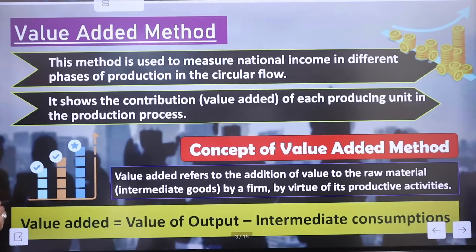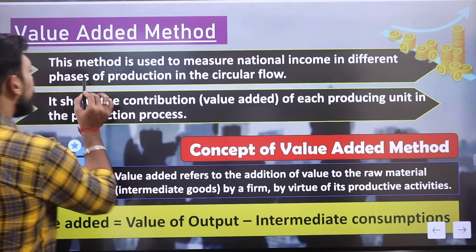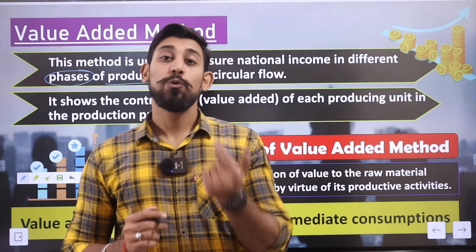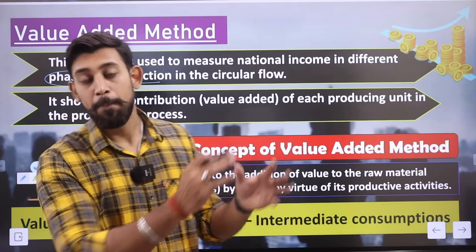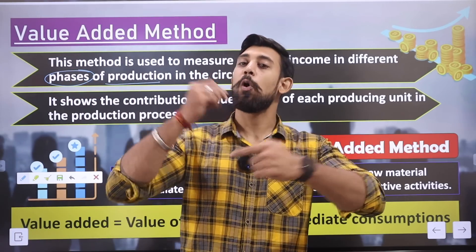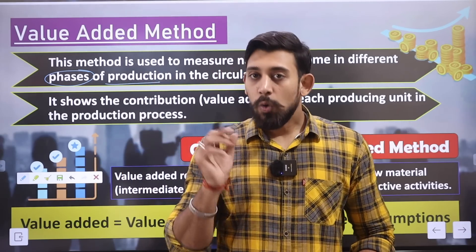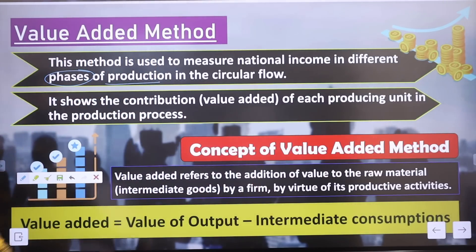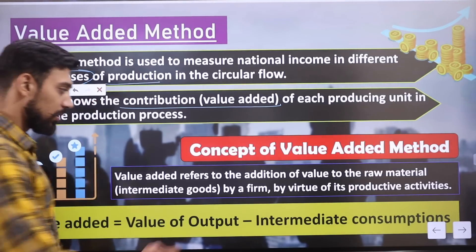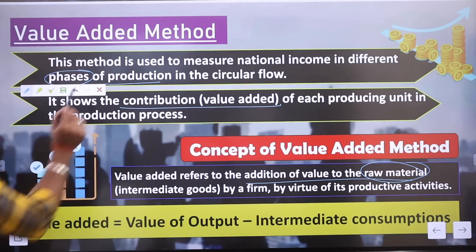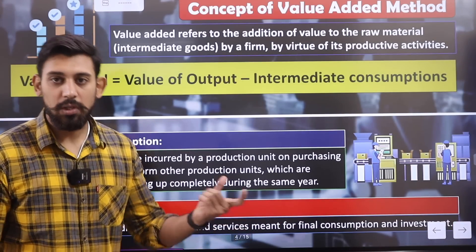The value added method is used to measure national income in different phases of production. For example, a farmer produces wheat, then a miller makes flour, then a baker makes biscuits — these are different phases. When there is production in different phases, the value added method is the most useful. It shows the contribution of each producing unit in the production process. Value added refers to the addition to the value of raw material. The formula is: Value Added = Value of Output minus Intermediate Consumption.